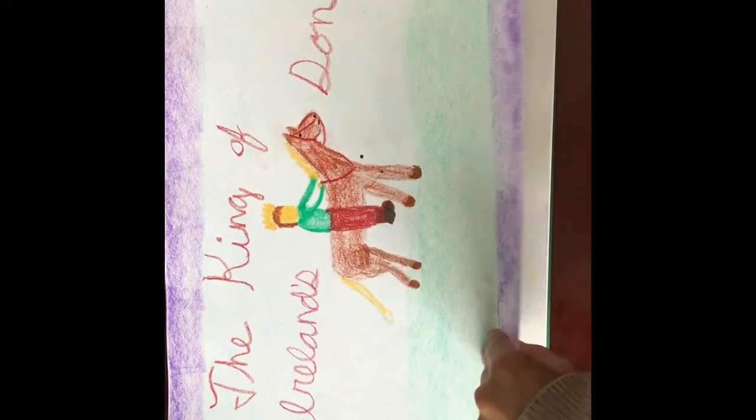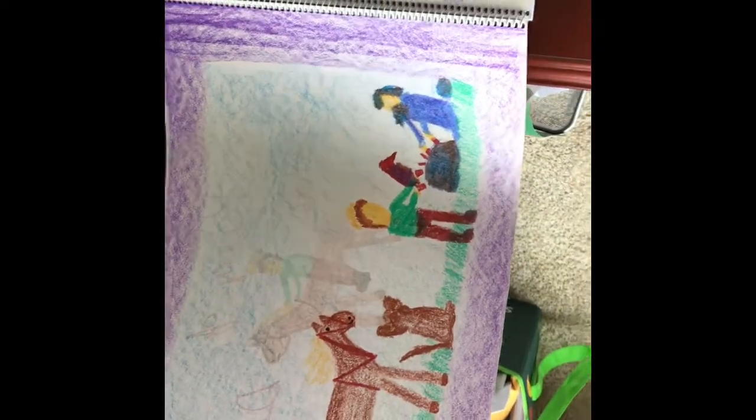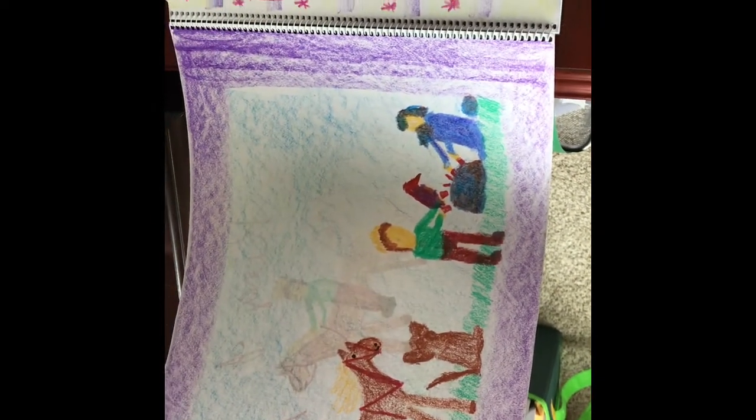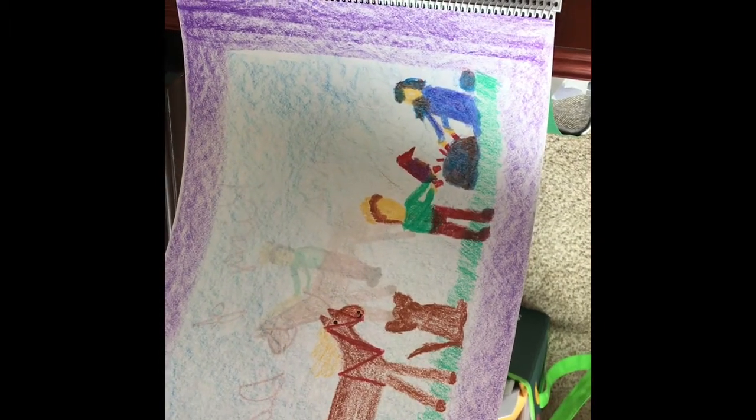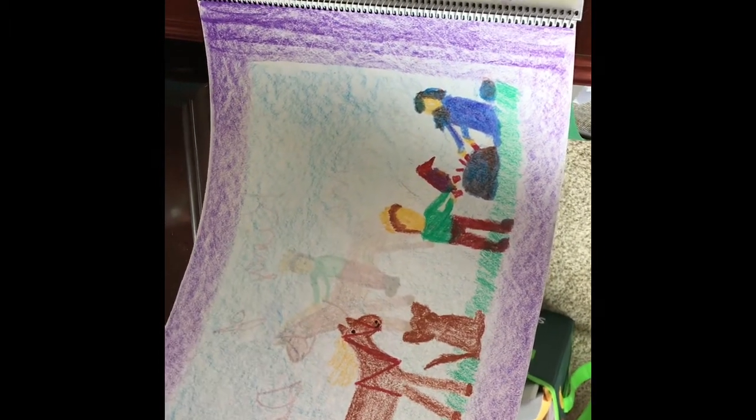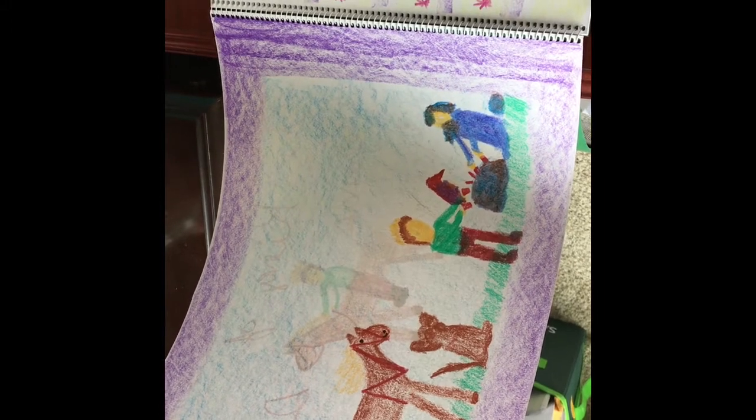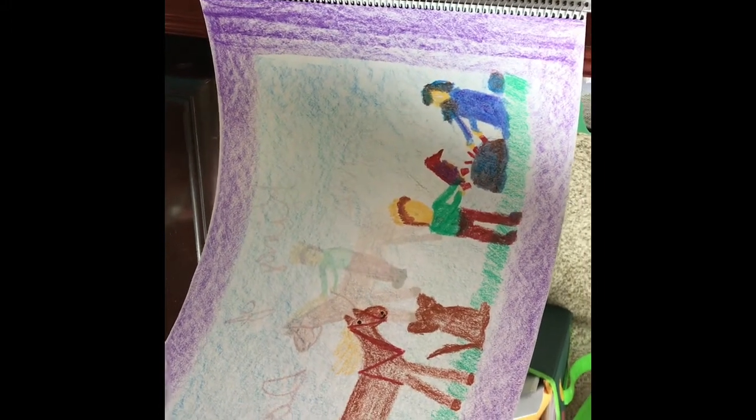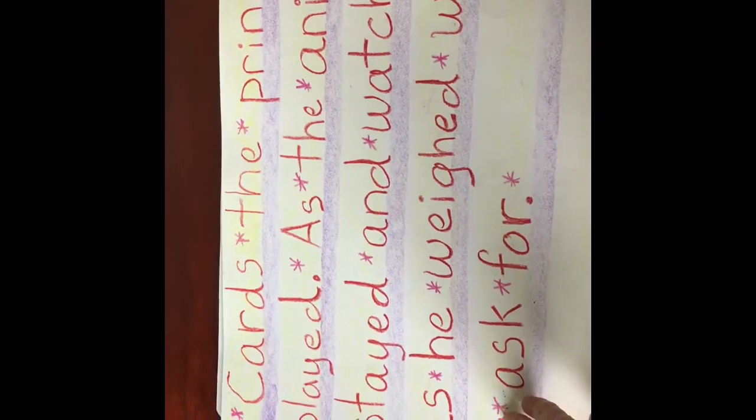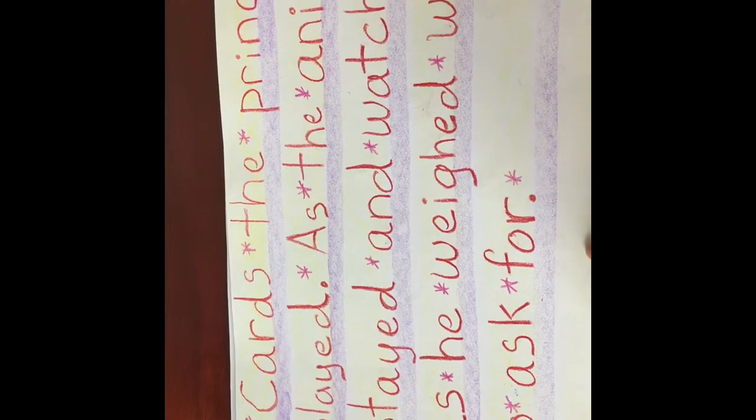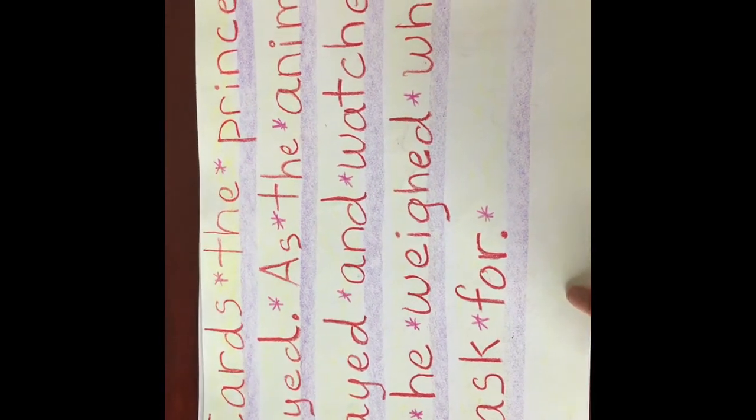We have our first drawing page with the King of Ireland's son, his steed and his hound and his hawk, and the enchanter of the Black Backlands. We have our first writing page: cards the prince played as the animal stayed and watched as he weighed what to ask for.